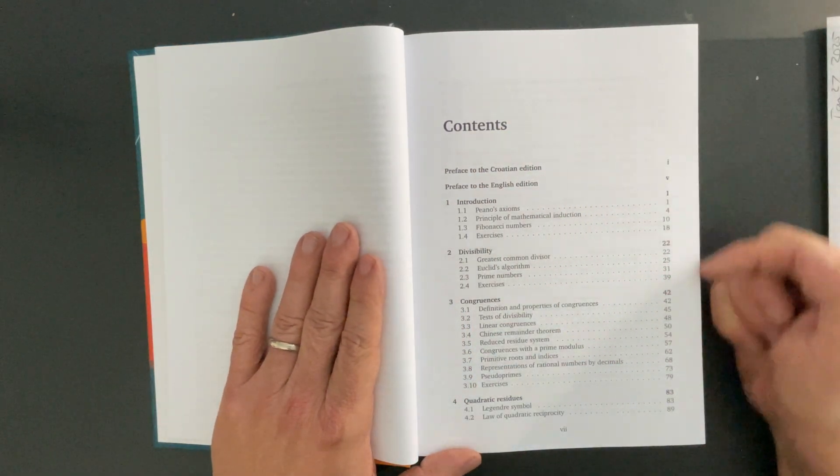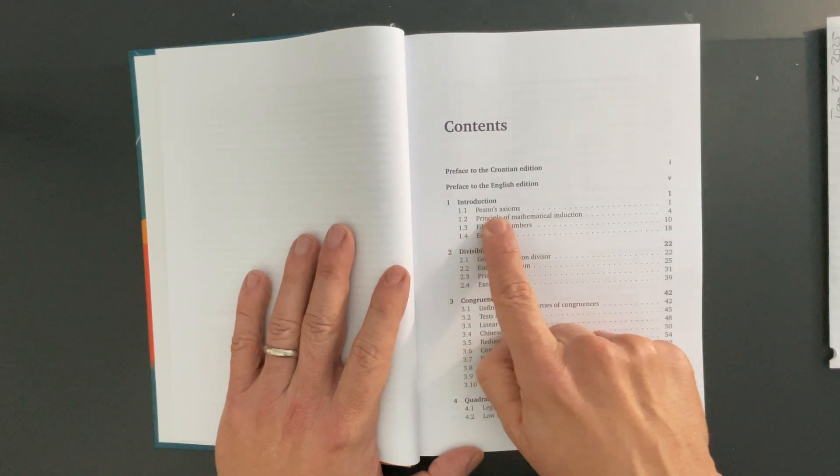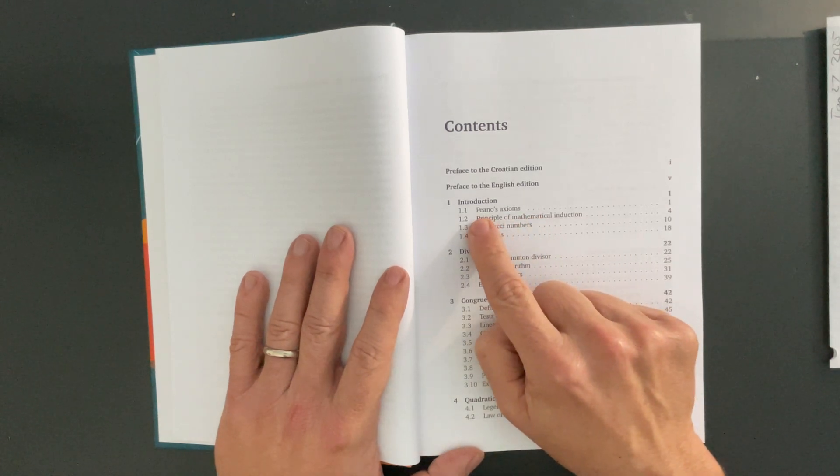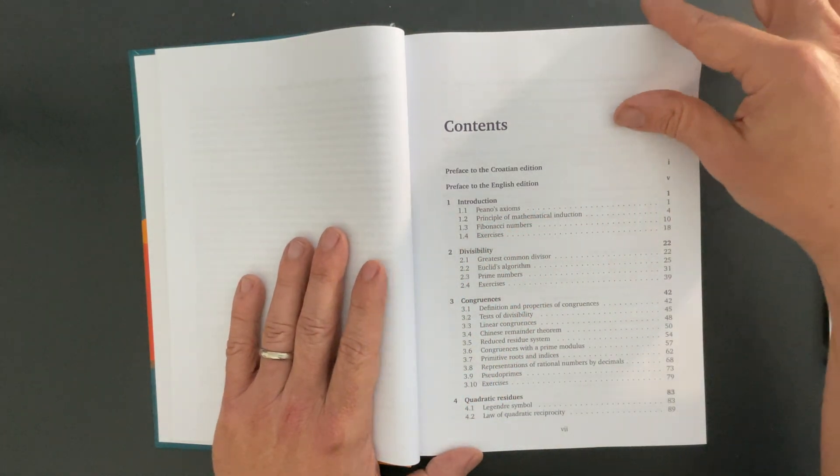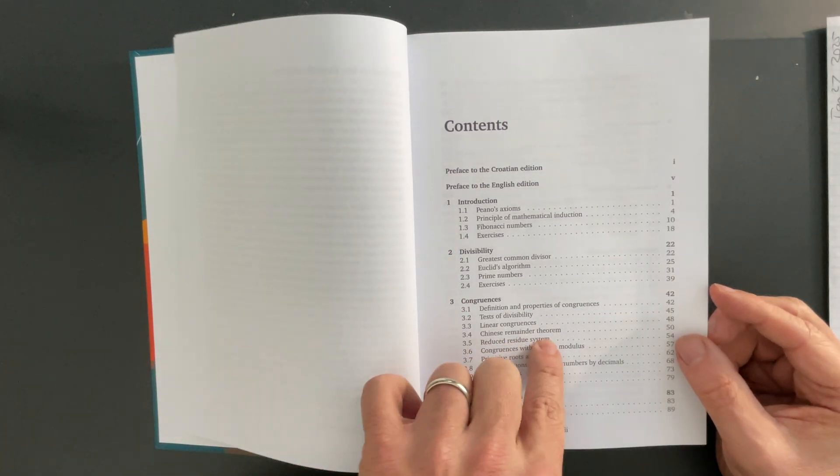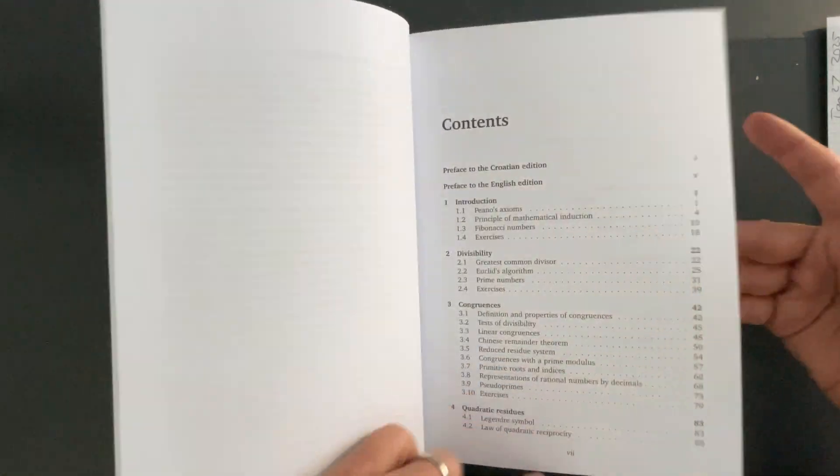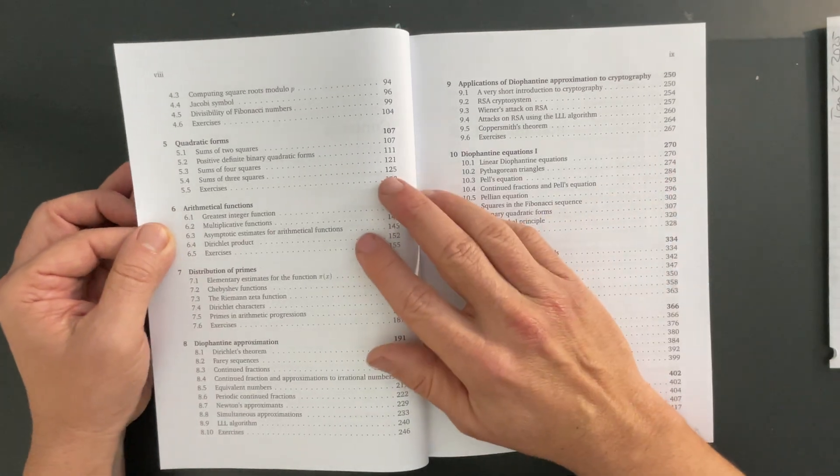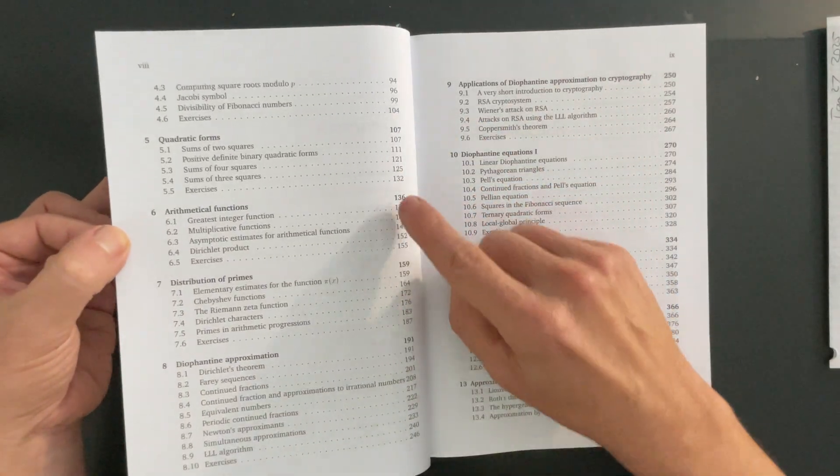I'll go through the contents briefly. Your intro material has got Peano's axioms, which I really like. Reminds me of Terence Tao's analysis book. Also, back to the Mendelsohn book on number systems that I covered in this channel. Fibonacci numbers. Your divisibility chapter. Then, congruences. Of course, I see Chinese remainder theorem. Quadratic residues. Legendre symbols. I'm going to do some problems also. Some problem videos. Quadratic forms. Arithmetical functions.